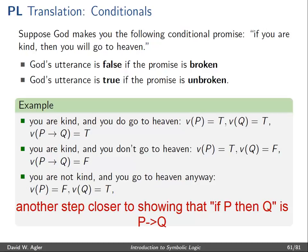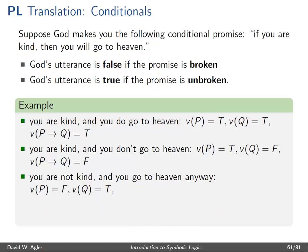A third case: you are not kind, but you go to heaven anyway. In this scenario, God has not broken a promise to us. God said that if we were kind, then we would go to heaven — what he didn't say is what he would do if we weren't kind. So given that God hasn't broken a promise to us, his utterance here remains true. The same holds in symbolic logic: if the antecedent P is false and the consequent is true, then the whole conditional is true.